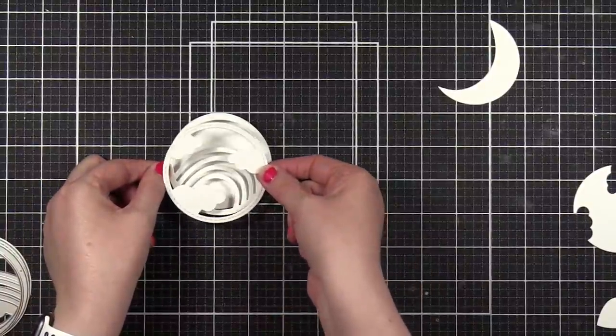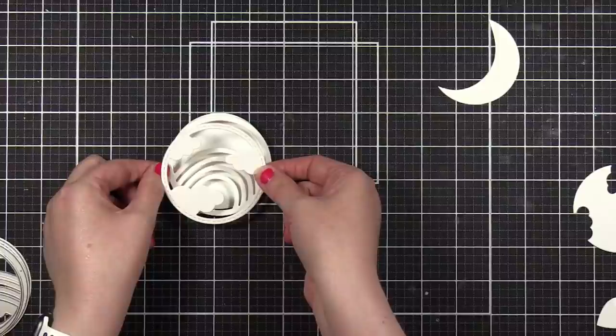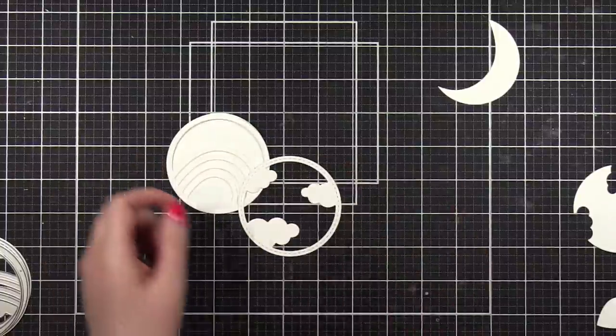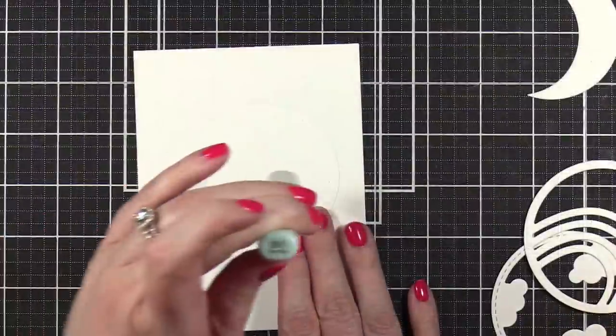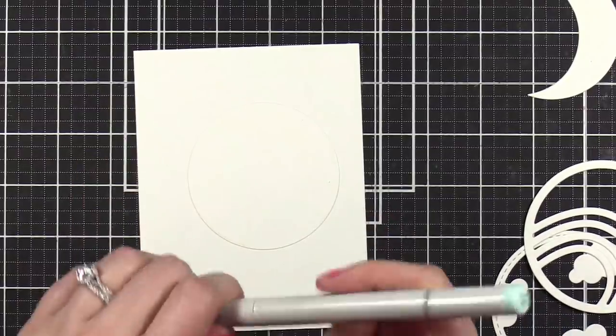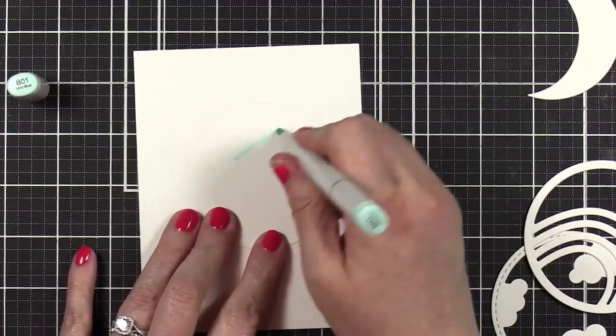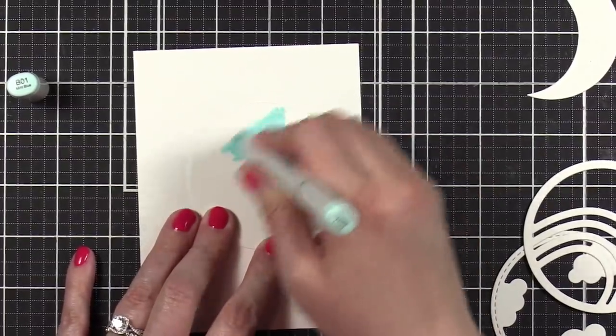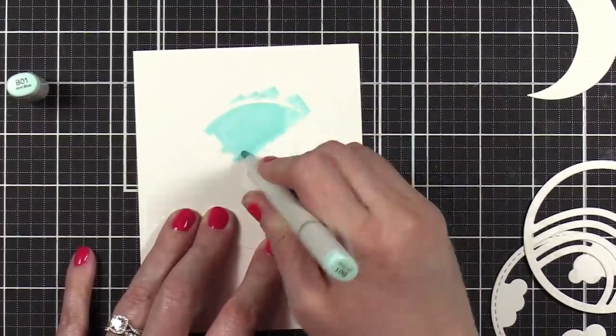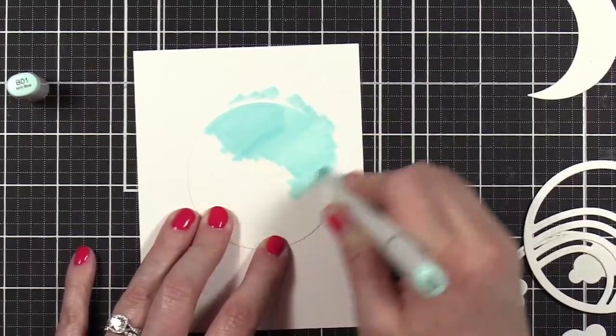The foam tape—mint blue. And since I want the whole circle to be that color, I'm gonna use the chisel end because then I can just start coloring and cover a lot of the surface area all at once.